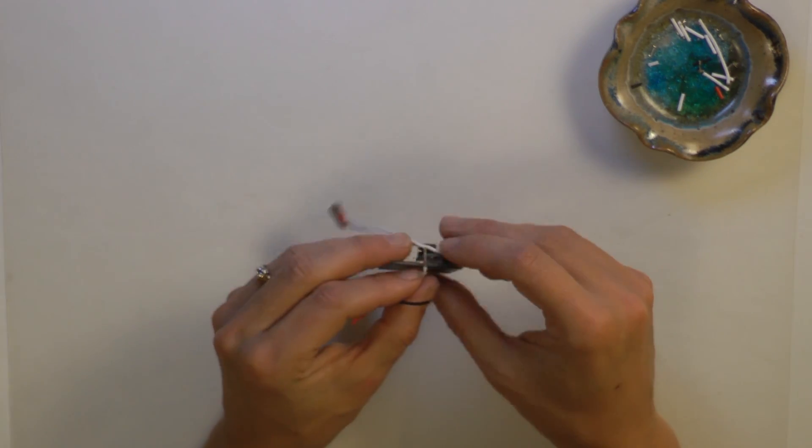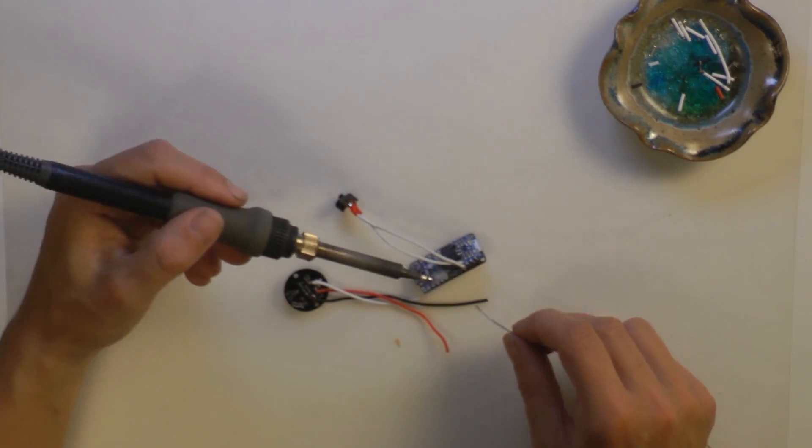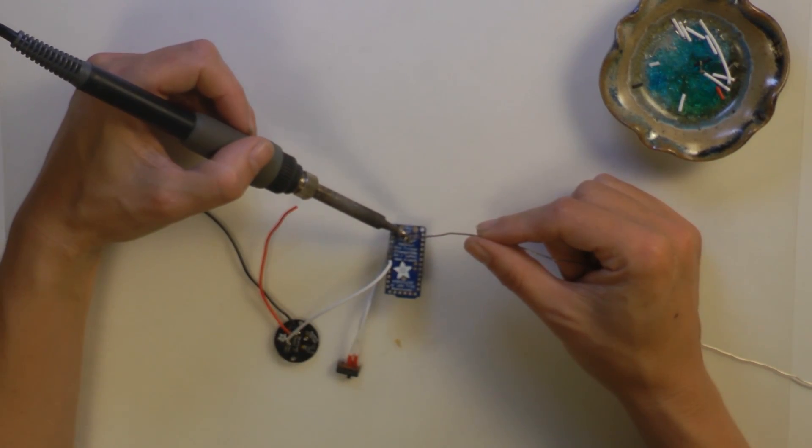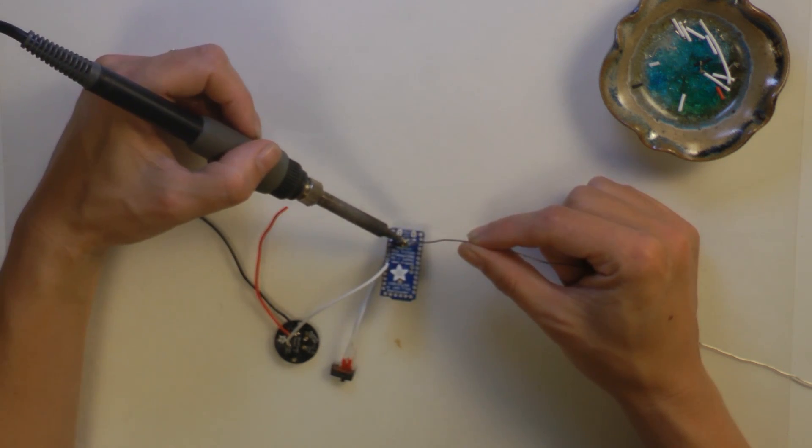Solder the white wire to pin 5. Tin the plus and minus pads on the back of the Pro Trinket and solder the red and black wires from the NeoPixel jewel to these two pads.